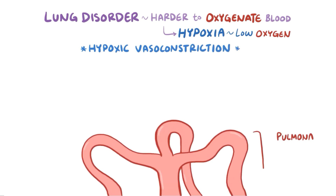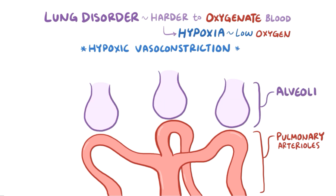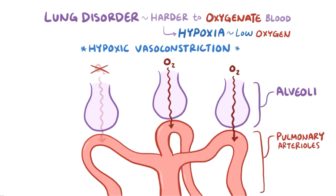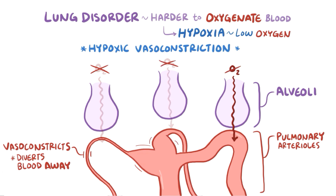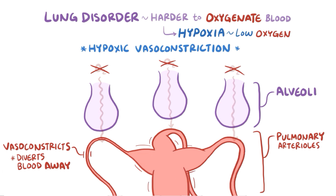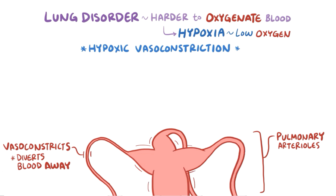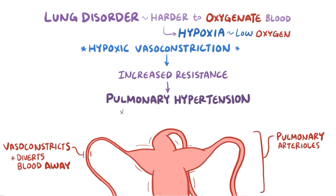Consider a couple of pulmonary arterioles in the lungs alongside the alveoli, with oxygen exchange between the two. If one of these alveoli is poorly ventilated, the corresponding arteriole vasoconstricts to divert blood away from it. This works pretty well, but when lots of alveoli are poorly ventilated — like with a lung disorder — they all start to vasoconstrict and the mechanism backfires. When lots of arterioles vasoconstrict together, there's an increase in resistance and it leads to pulmonary hypertension, with pulmonary blood pressure rising above 25 mmHg.